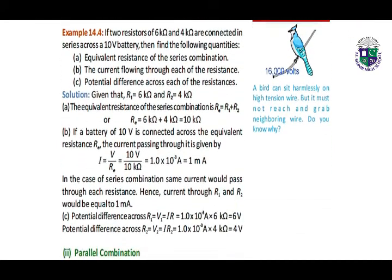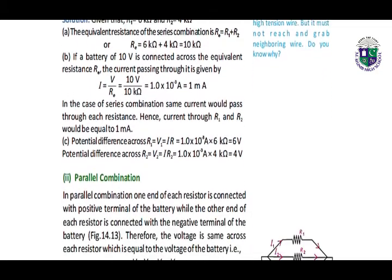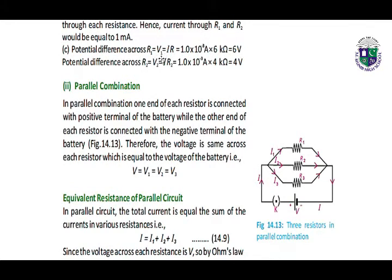Here we have the example. We have to find the equivalent resistance, the current flowing through each of the resistances, and the potential difference. R1 is 6 kΩ and R2 is 4 kΩ. The equivalent resistance of the series is RE equals R1 plus R2, giving us 10 kΩ. With a battery of 10 volts connected through the equivalent resistance RE, we calculate the current flowing through each resistance. To find the potential difference across R1: V1 equals IR1. By multiplying, we get the potential difference across R1 and R2.